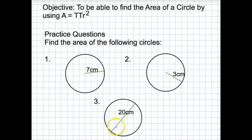Hi, welcome to the practice questions on finding the area of a circle using the formula A = πr².